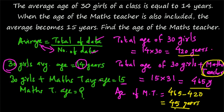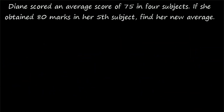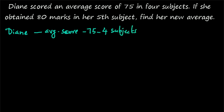Whenever you have the average and the number of people, you can easily find the total. Take the difference between the total age of 30 girls plus the math teacher and the total age of 30 girls alone to get the teacher's age. Now, question number 2: Diane scored an average score of 75 in 4 subjects. If she obtained 80 marks in her 5th subject, find her new average. So Diane's average score is 75 for 4 subjects.